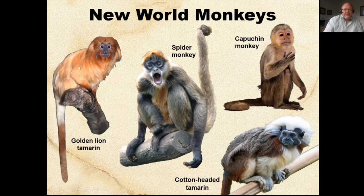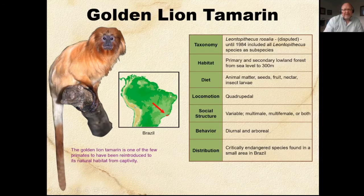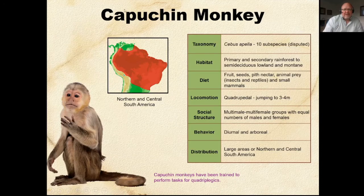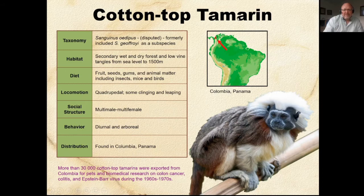The species include the golden lion tamarin, the spider monkey, the capuchin monkey, and the cotton-headed tamarin. All of them are really small but extremely agile, jumping around in trees. The black-handed spider monkey and the capuchin monkey appear a lot in Hollywood productions. The cotton-headed tamarin are again very very small.